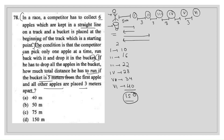Now for the arithmetic progression method: since the first apple's round trip of 10 meters is separate, we write it aside to add later. For the remaining 5 apples, we use the AP sum formula: S = n/2 × [2a + (n-1)d], where n = 5 apples, a = 16 (round trip for second apple), and d = 6 (common difference).